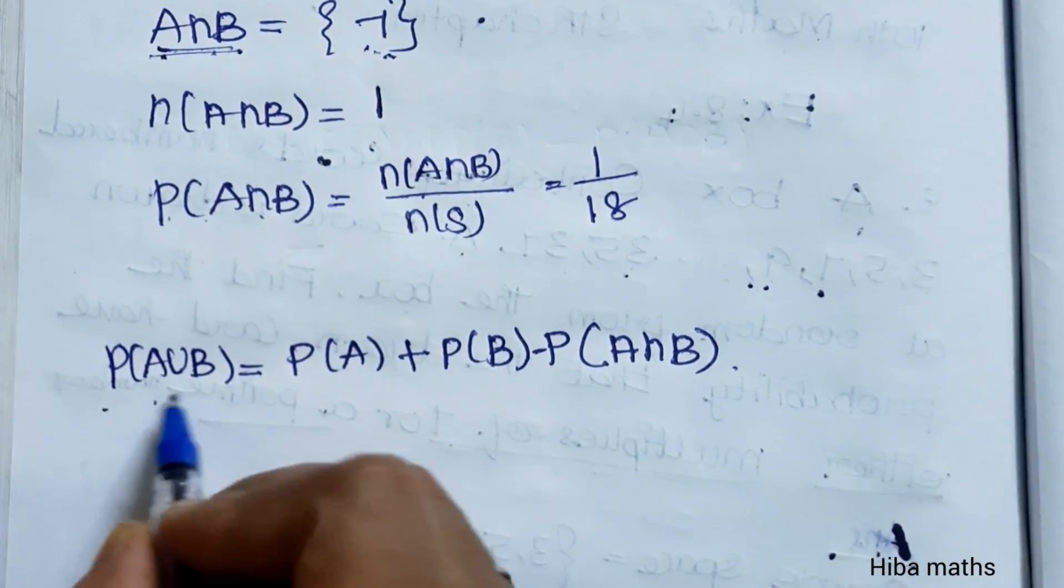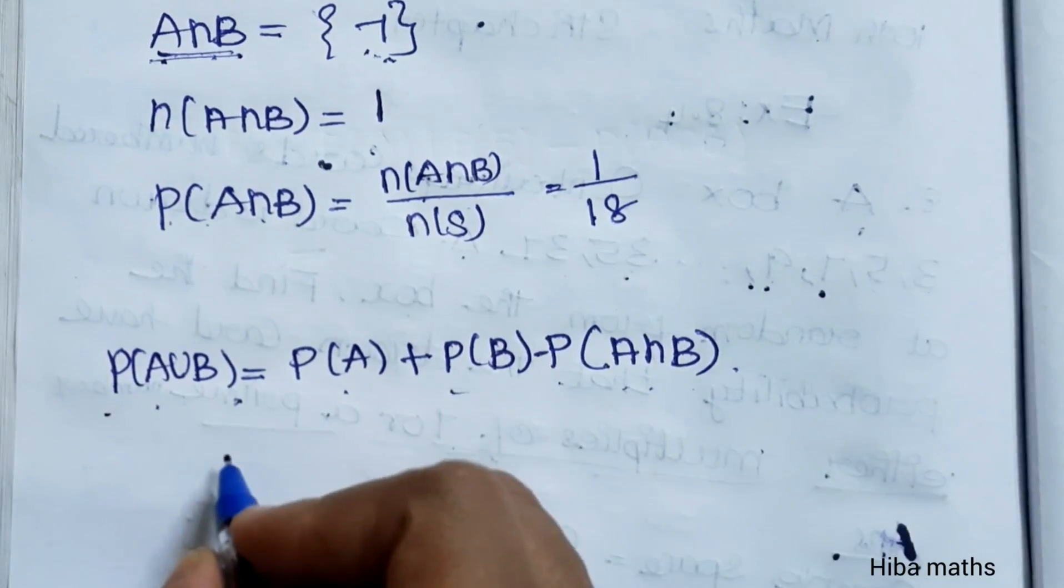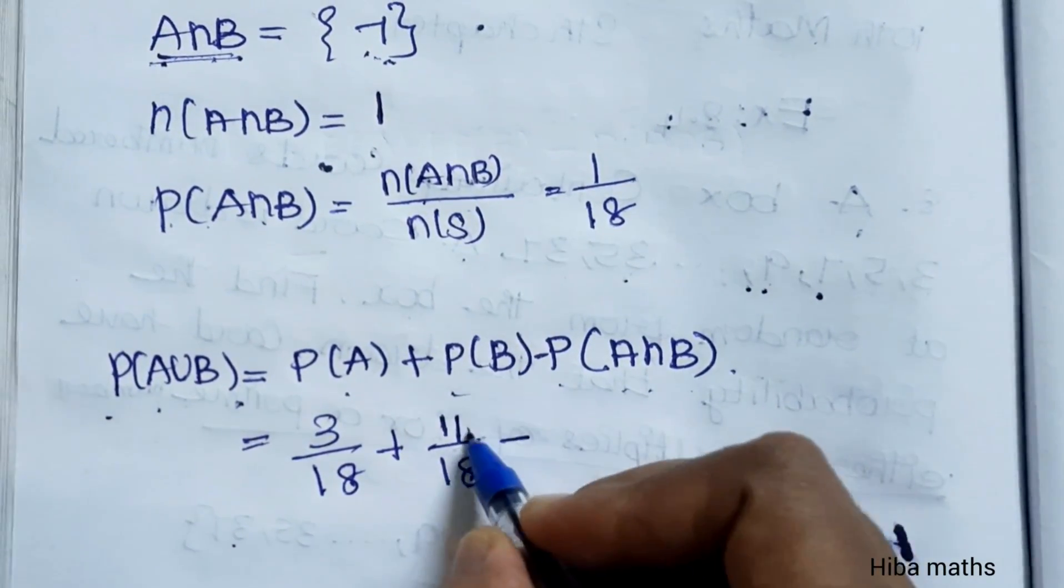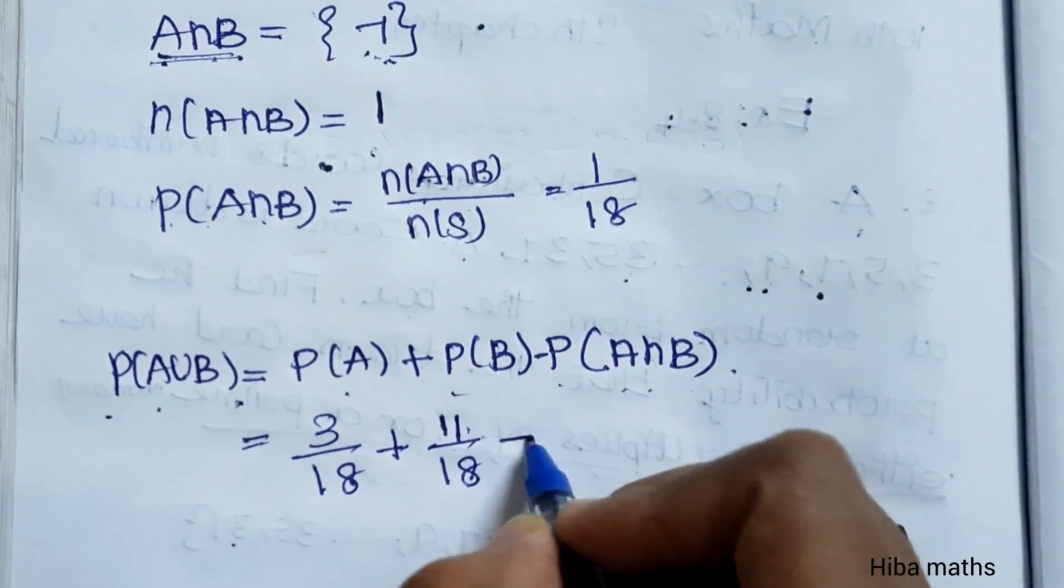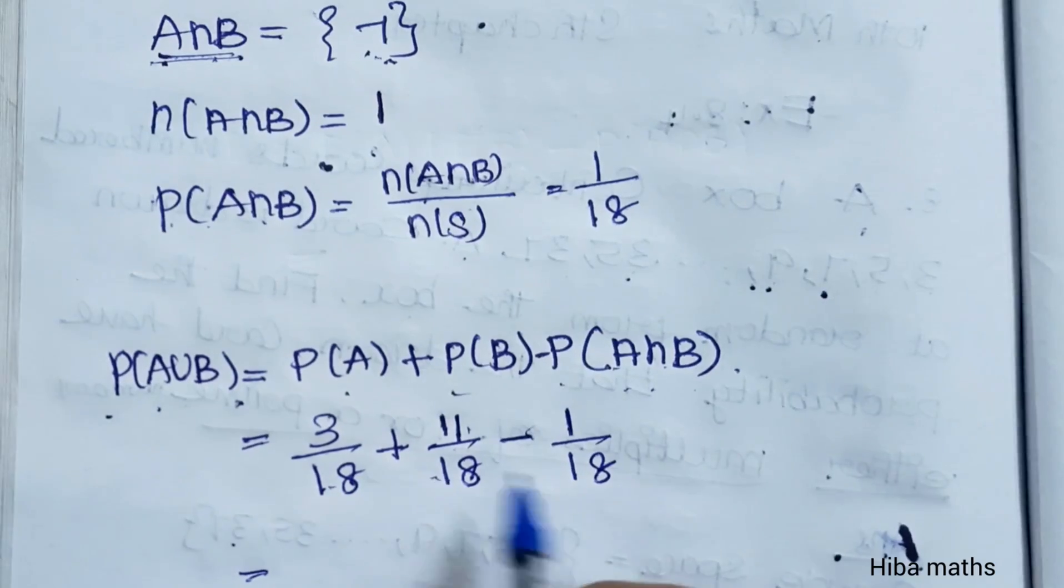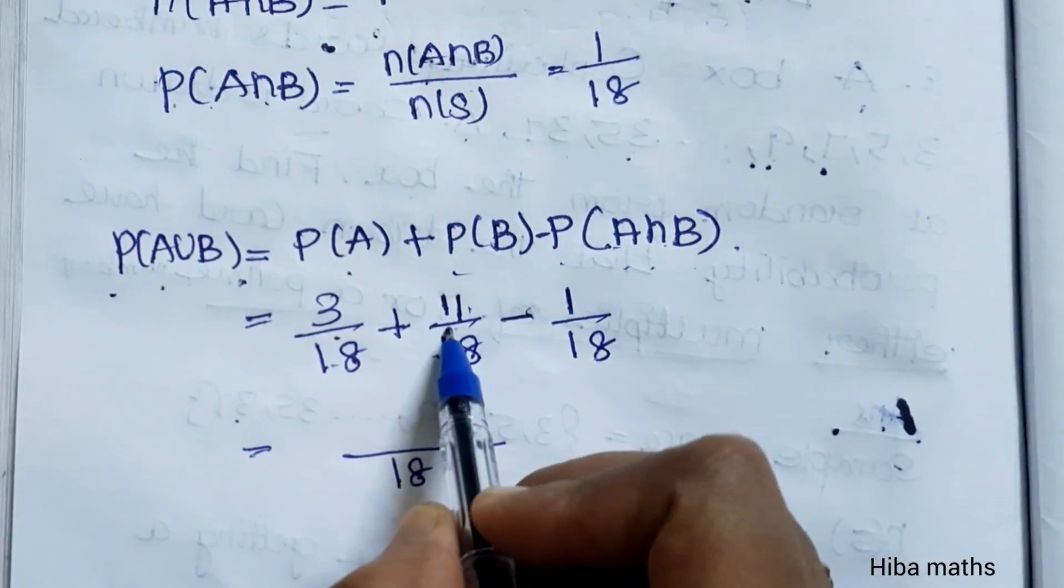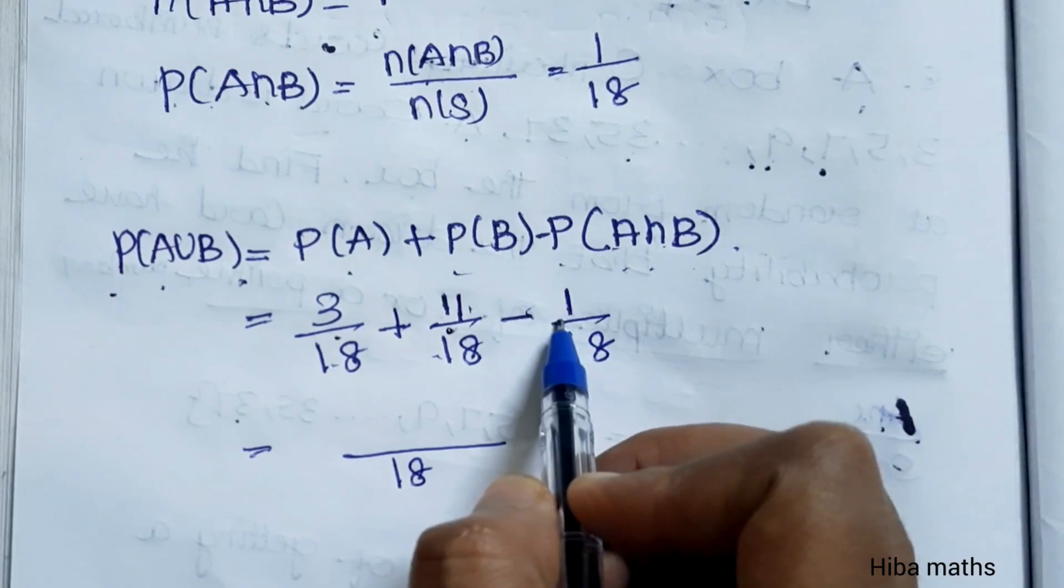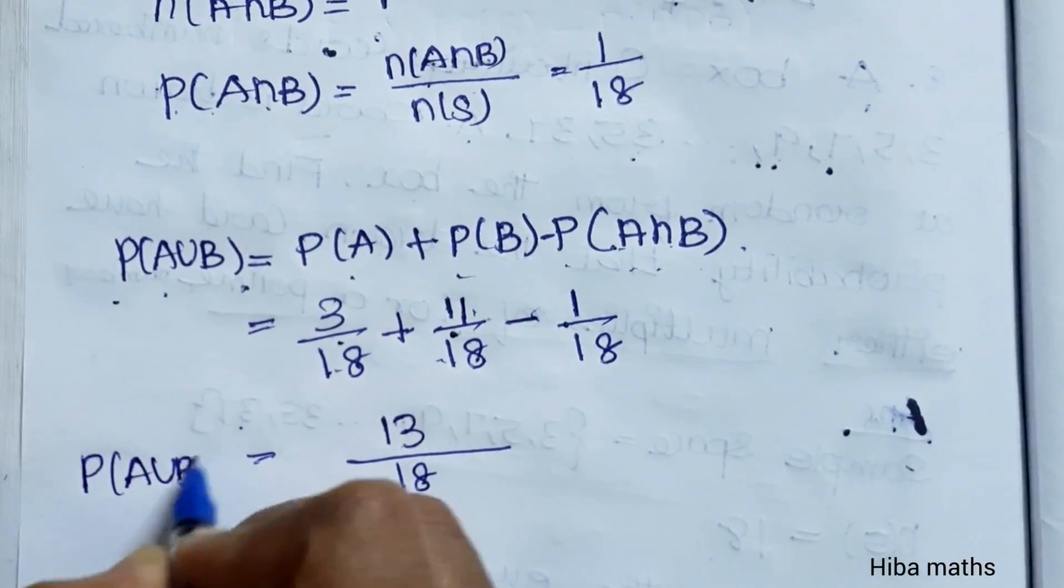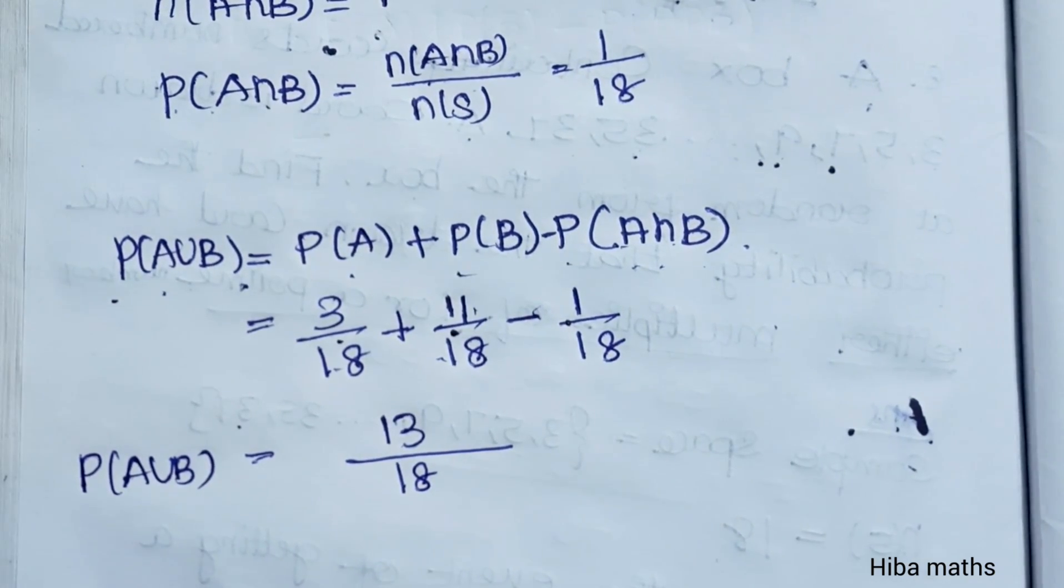P(A union B) is equal to P(A) plus P(B) minus P(A intersection B). P(A) value 3/18, P(B) value 11/18, minus P(A intersection B) value 1/18. So denominator is common, 18. 3 plus 11 is 14, 14 minus 1 is 13. So probability A union B value is 13/18. Thank you so much for watching.